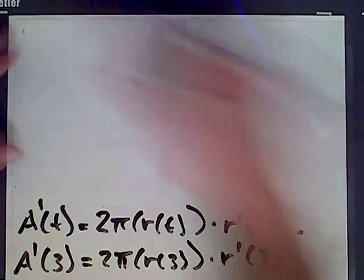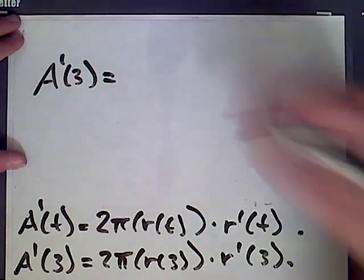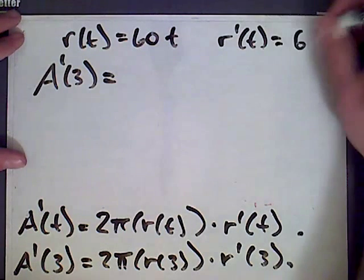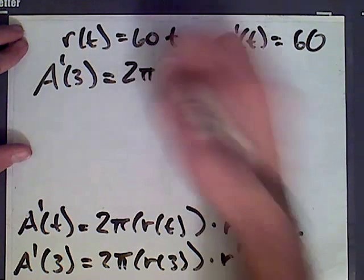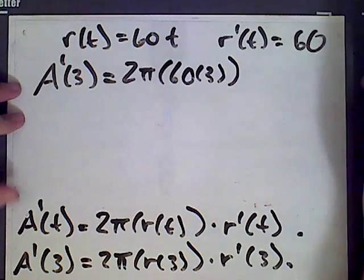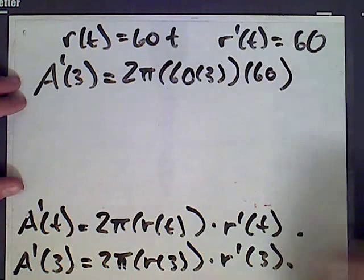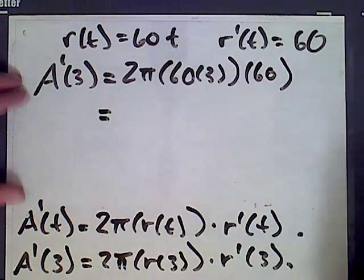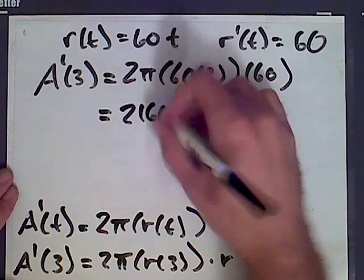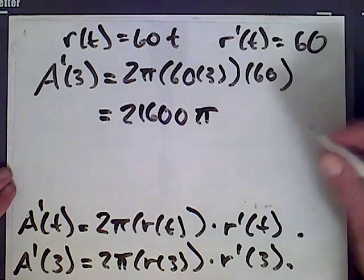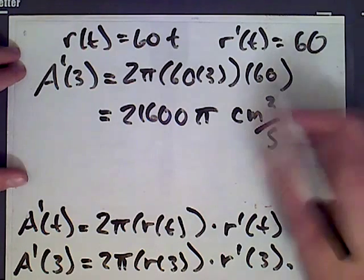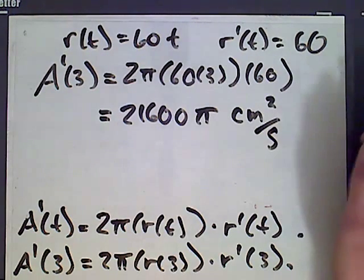What we get, finally, A'(3). I've erased the values, let me remind you. r(t) was 60t, and r'(t) was 60. So A'(3) is going to be 2 pi, r(3), plug 3 into this formula for r(t) here, 60 times 3, and then r'(t) is just, it's always 60. So this is times 60. And what you get when you multiply everything together is this value here, 21,600 pi. And the units are centimeters squared per second. So it's how quickly the area, given by centimeters squared, is changing per second. And that's our answer.